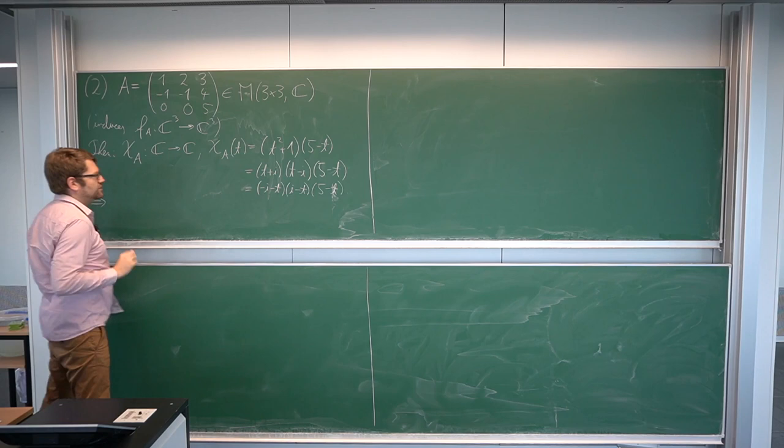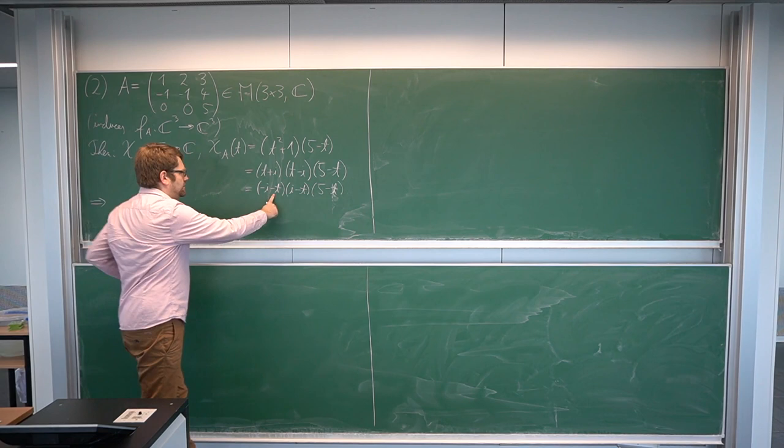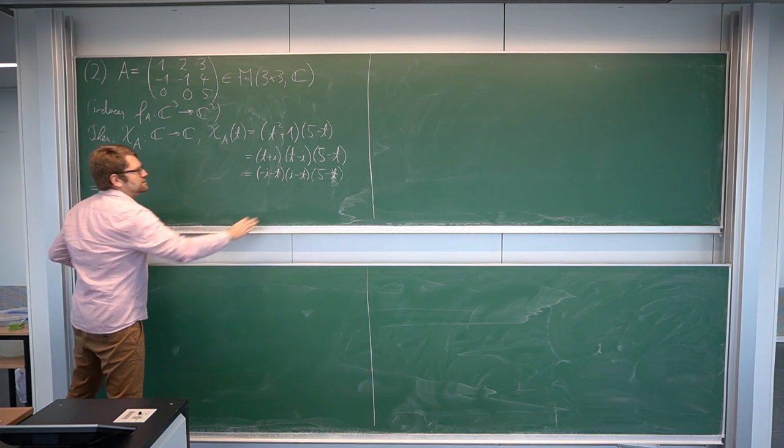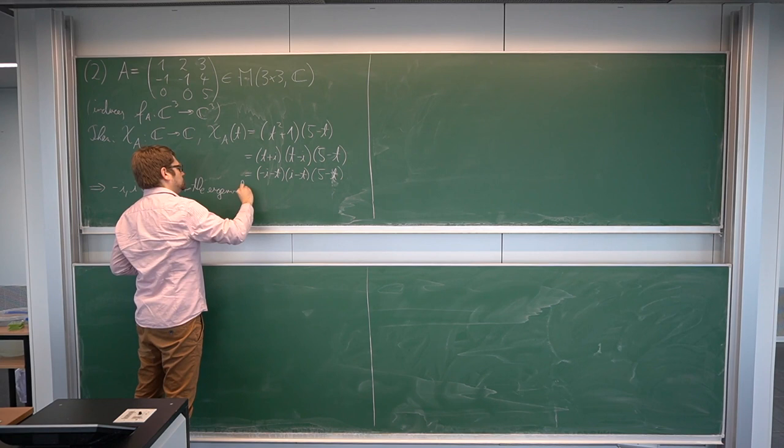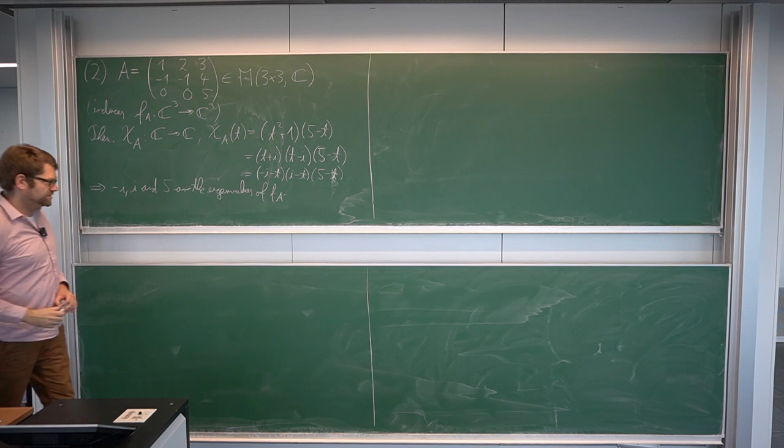From this factorization, what are the eigenvalues? These are the zeros of this complex polynomial. Here we have minus i as one eigenvalue, and here we can get the eigenvalue i. From the third factor we get 5. So the eigenvalues of f_A, the complex endomorphism, are minus i, i, and 5.